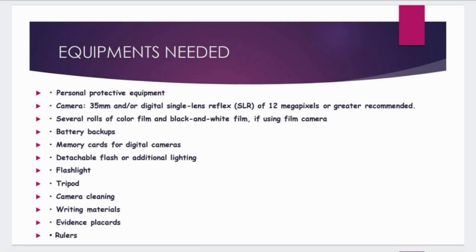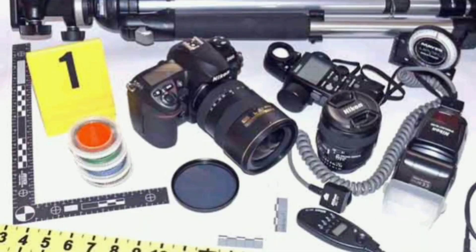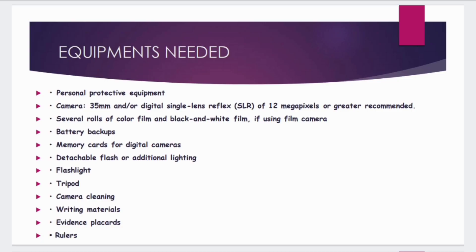The next main heading is equipment needed. Equipment includes personal protective equipment, a camera of 35mm or digital single-lens reflex (DSLR) of 12 megapixels, battery backups, several rolls of color film and black and white film if using a film camera, memory cards for digital camera, detachable flash or original lighting, flashlight, tripod, camera cleaning kit, writing materials, evidence placards, and rulers. These are very much important for crime scene photography.